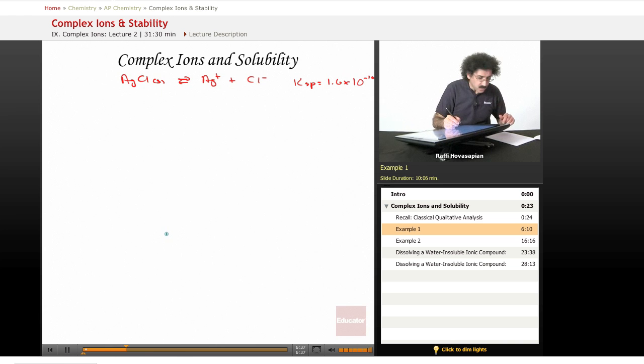Alright, watch what happens. So I have this solution. I have a whole bunch of silver chloride solid down at the bottom. So this is AgCl solid, and there's a few ions of silver and a few ions of chloride.